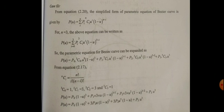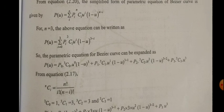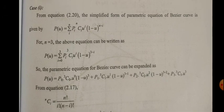This is the solution. P(u) is equal to summation of i from 0 to N of P_i times N-C-i times u^i times (1 minus u)^(N minus i). This is the formula of the Bezier curve in equation format.